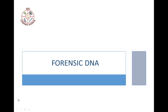Welcome to Forensic DNA. This is the second topic of Module 4. We will begin by discussing the structure of DNA and then the differences between nuclear DNA and mitochondrial DNA. We will discuss basic DNA terminology, which will then allow us to discuss two different techniques commonly conducted in forensic laboratories: RFLP and PCR. Finally, we will discuss the database used for DNA samples.